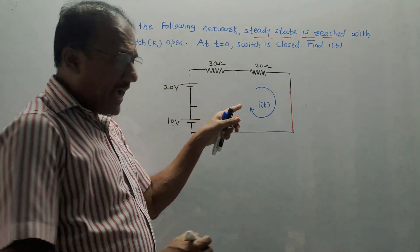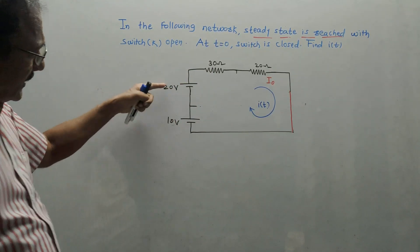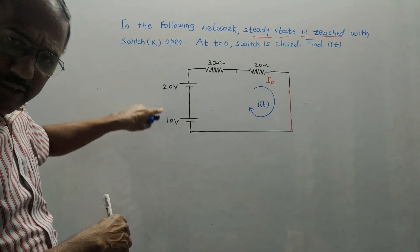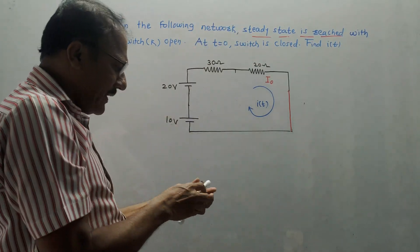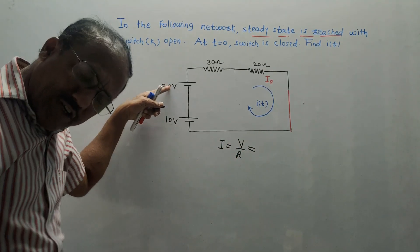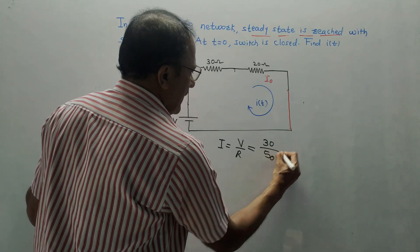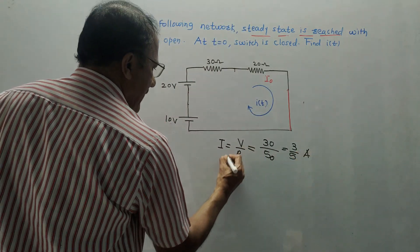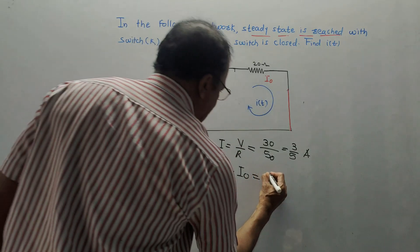Now our aim is to calculate the current I. This current is the initial current, denoted by I₀. The calculations are pretty simple. These are two voltage sources — 20 volt and 10 volt — connected in series, so total voltage becomes 20 plus 10, that is 30 volts. These two resistors are also in series, so it is 30 plus 20, that is 50 ohms. Using Ohm's law, I = V/R, total voltage is 30 volts divided by total resistance 50 ohms, giving 3/5, that is 0.6 amperes. So the initial current I₀ is 0.6 amperes.